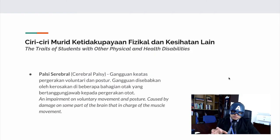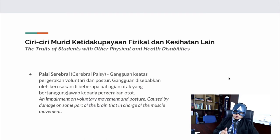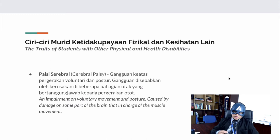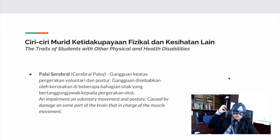Next, let's look at the traits of students with this kind of disability. The first one is cerebral palsy. Cerebral palsy is an impairment of voluntary movement and posture, caused by damage to the part of the brain in charge of muscle movement.